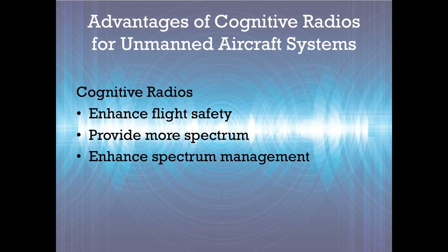In conclusion, cognitive radios can contribute to unmanned aircraft operations in several ways. Cognitive radios enhance flight safety; they allow pre-planning of even complex communication scenarios. They provide more spectrum and enable and encourage many types of spectrum sharing. Cognitive radios enhance spectrum management; they allow secure and distributed access to spectrum.